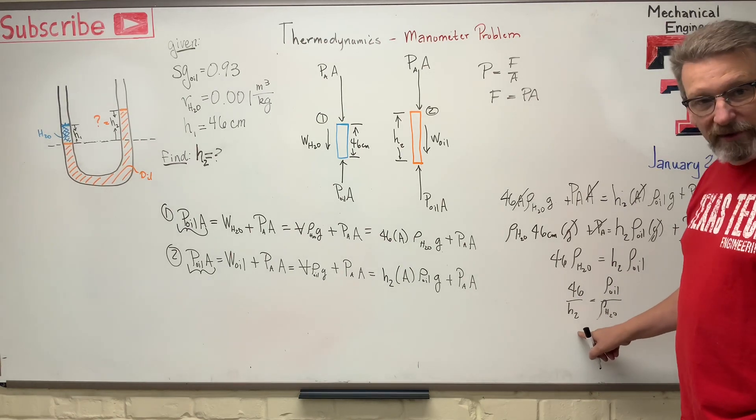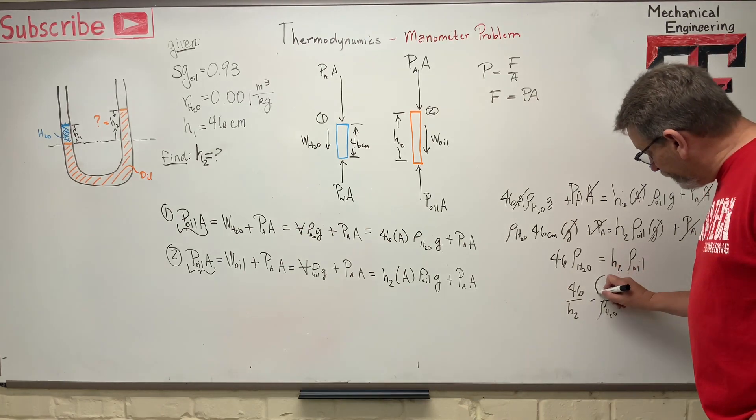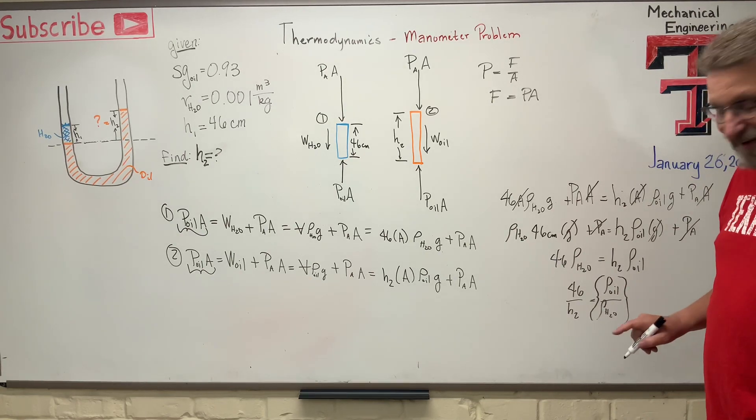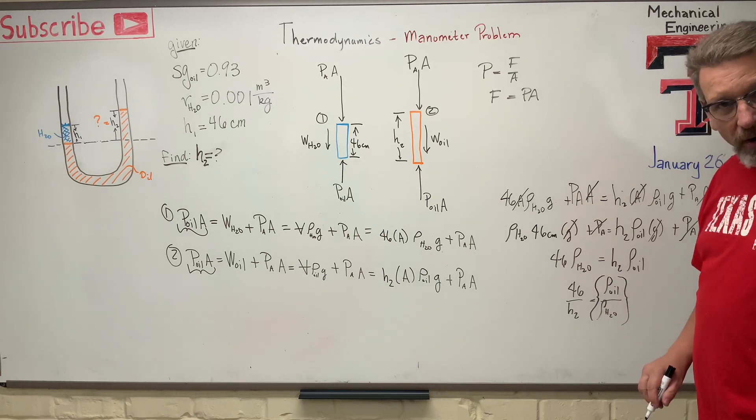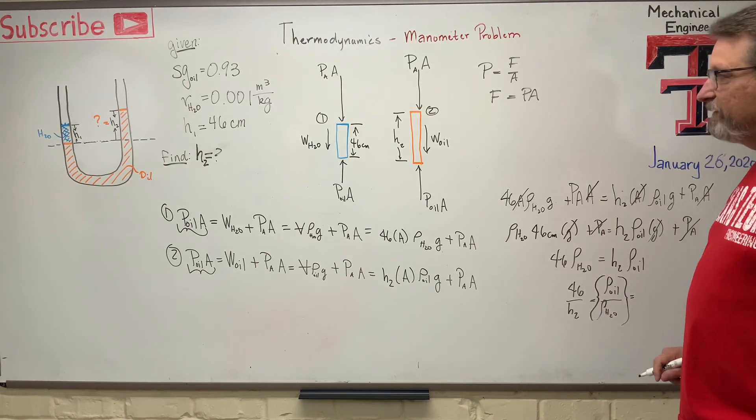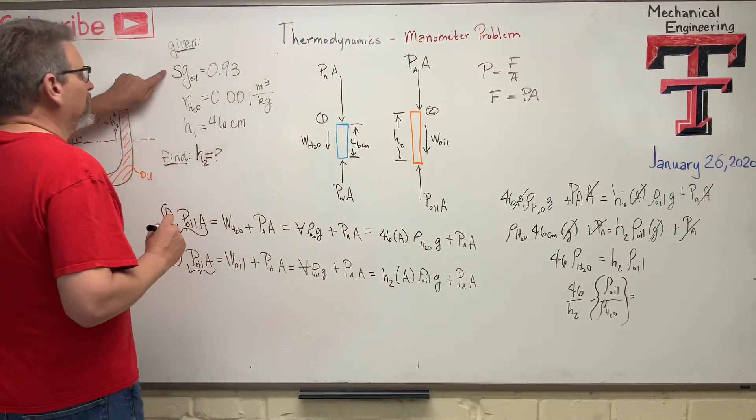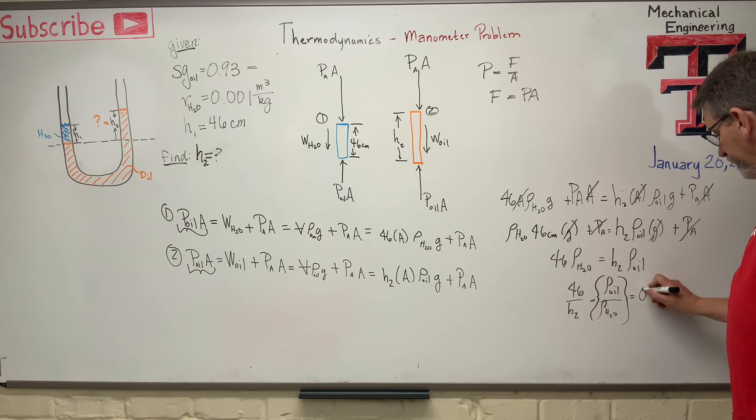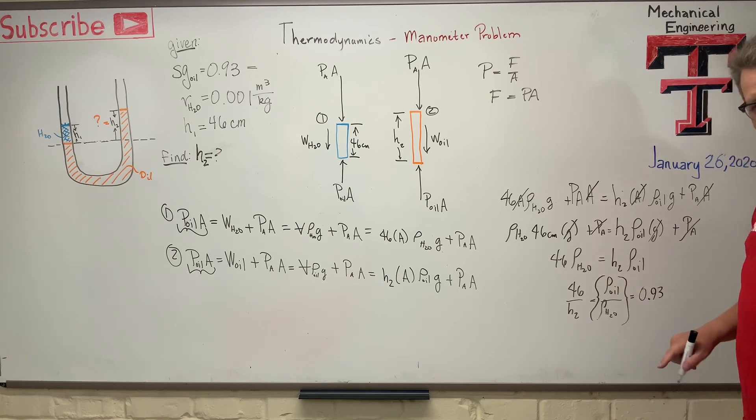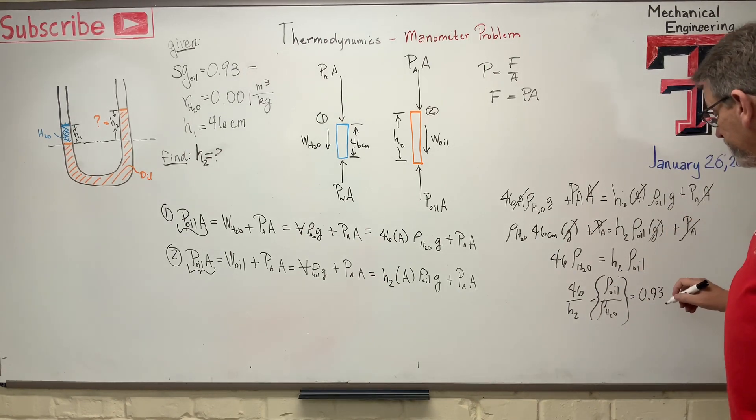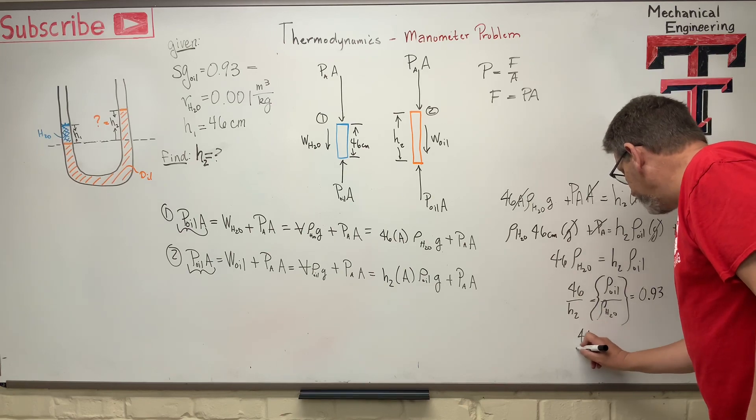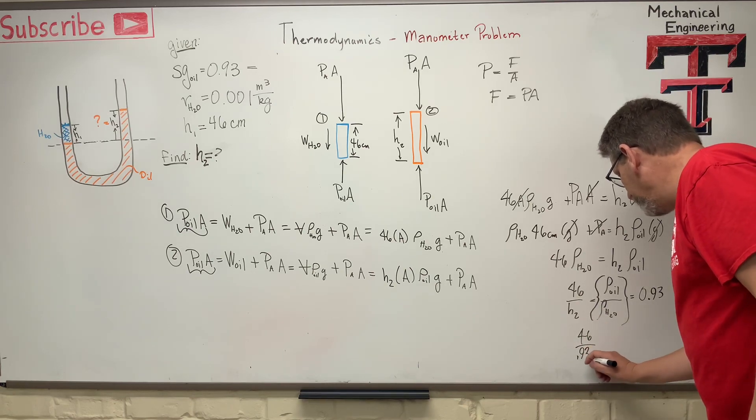Now, I did that on purpose. I don't like to have my only unknown on the bottom over here, right? But I did that on purpose so that I wound up with this because that should look similar or familiar, rather, to you. What is rho of matter divided by the rho of water? Guess what that is? That's specific gravity, right? And we're given, right here, the specific gravity of the oil, 0.93. And again, right, specific gravity divided by specific gravity, so that's unitless. That's a unitless property there. So let's just put the H2 over this side and divide over there, so 46 divided by 0.93 is equal to H2.